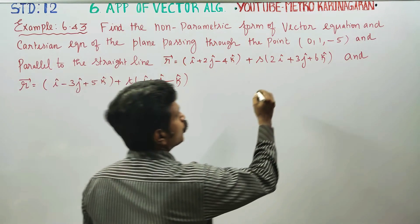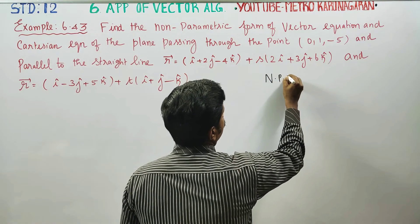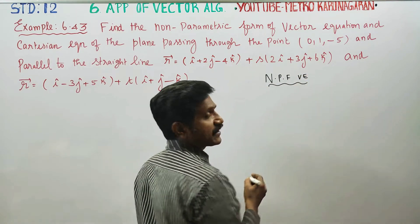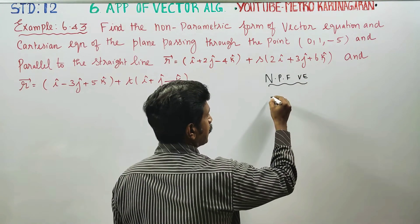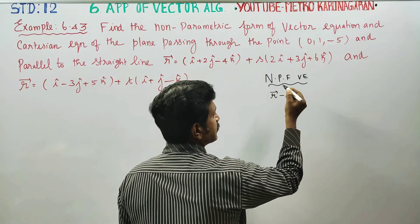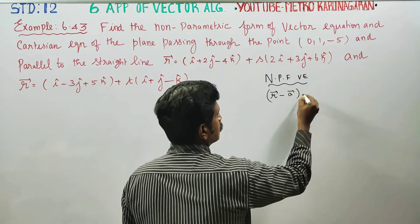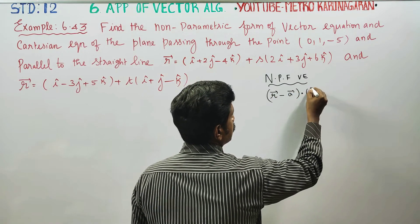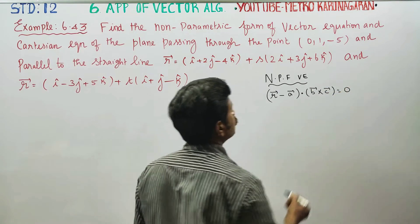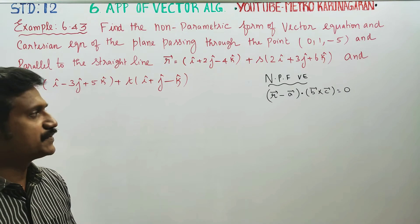First of all, the non-parametric form of the vector equation formula is: r vector minus a vector, dot b cross c, is equal to 0. This is the formula for the non-parametric form of the vector equation.